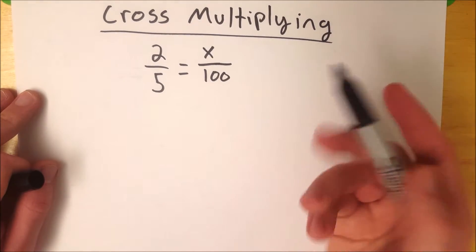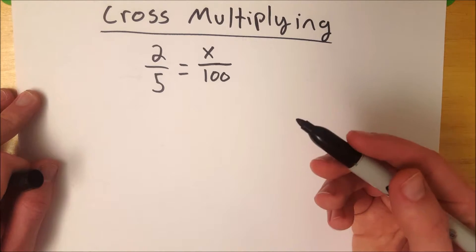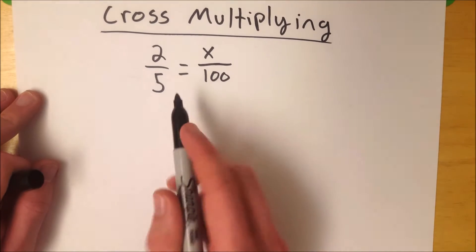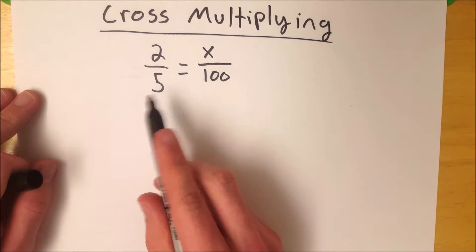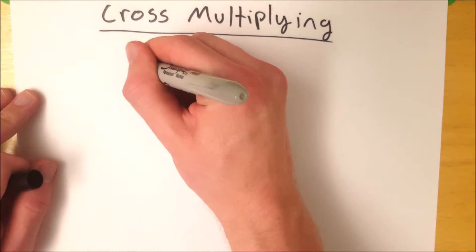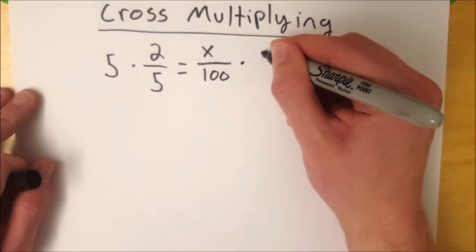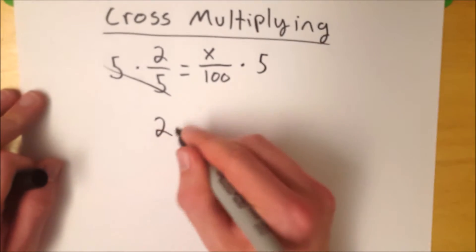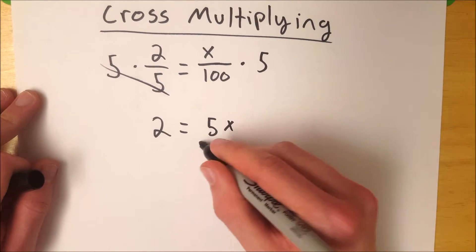You could use cross-multiplying for this, but first, just to show you how and why it works, we'll go through it the more laborious way. To solve this, you multiply both sides of the equation. First, we'll multiply both sides by 5 in order to get rid of this denominator. The 5's cancel out, leaving us with 2 equals 5x divided by 100.